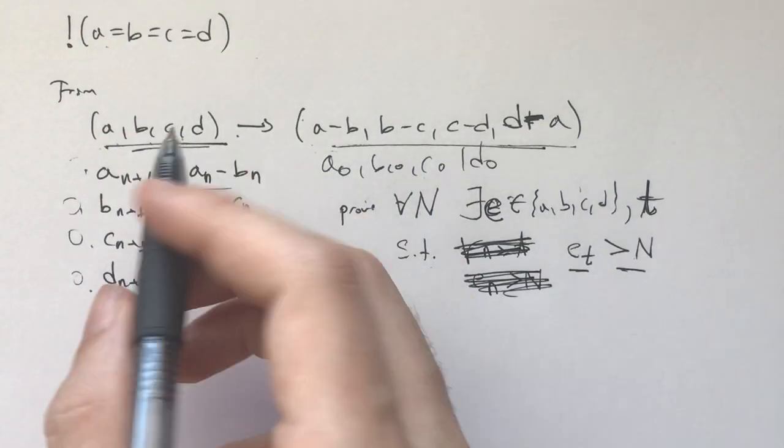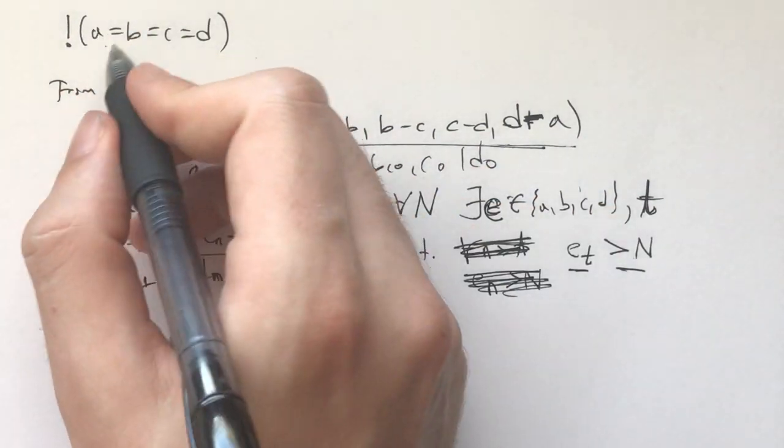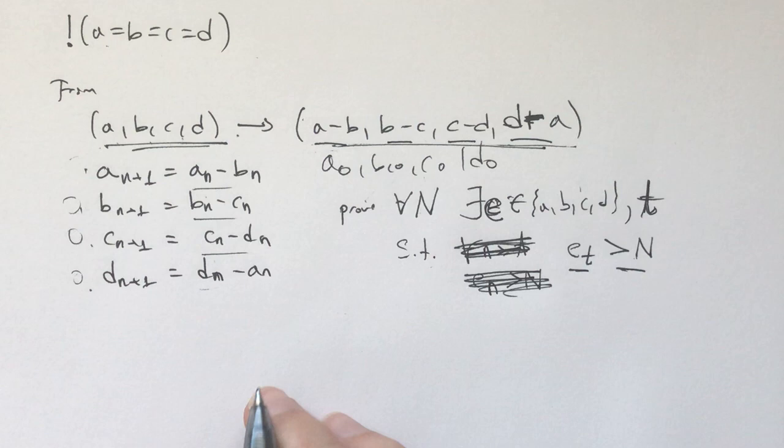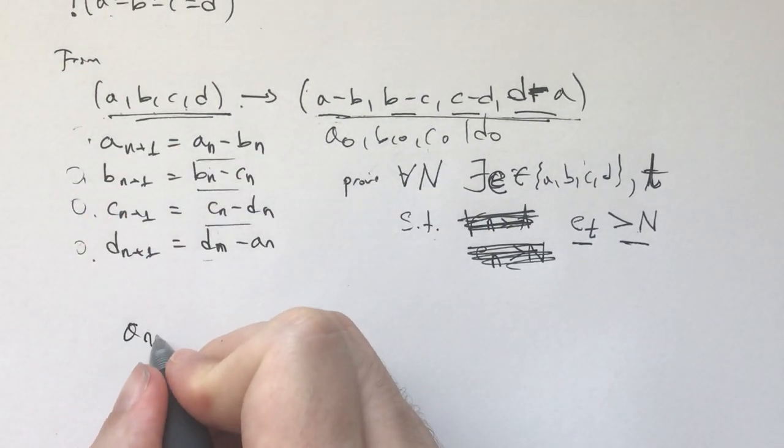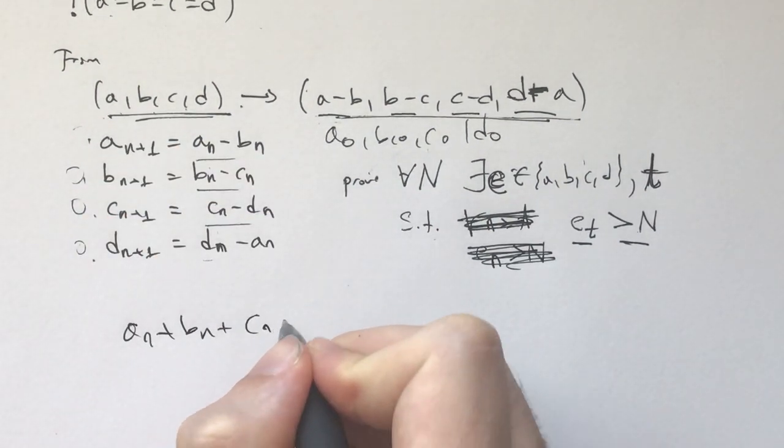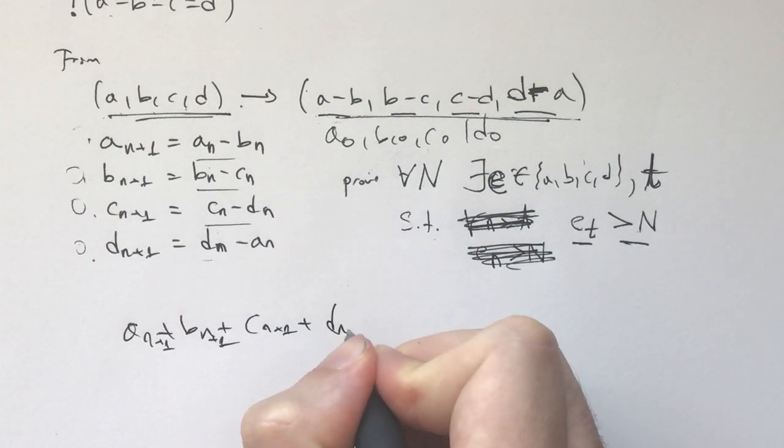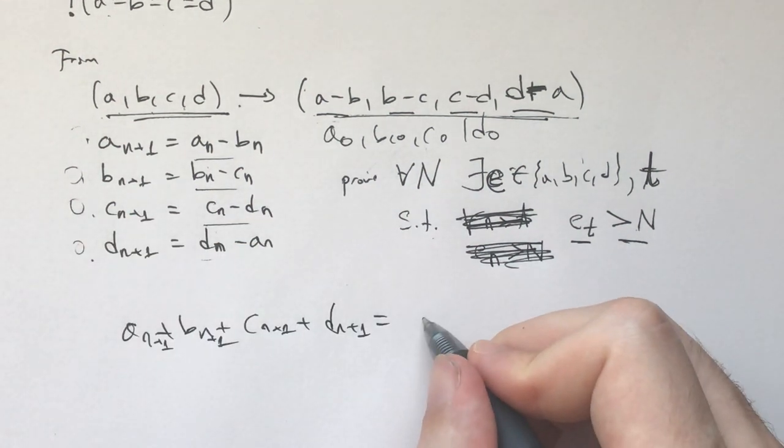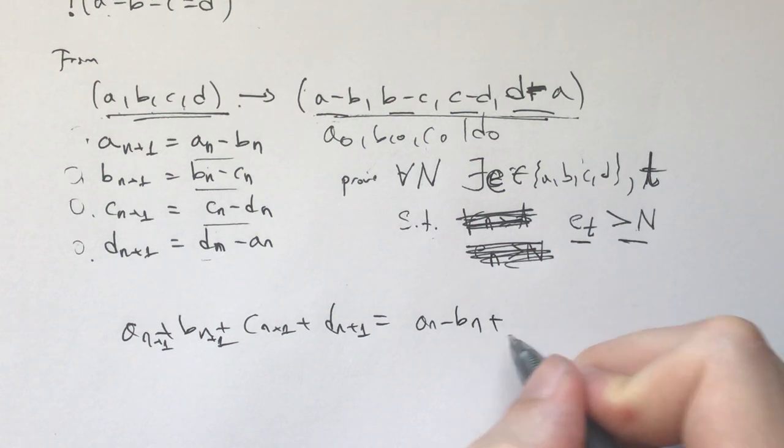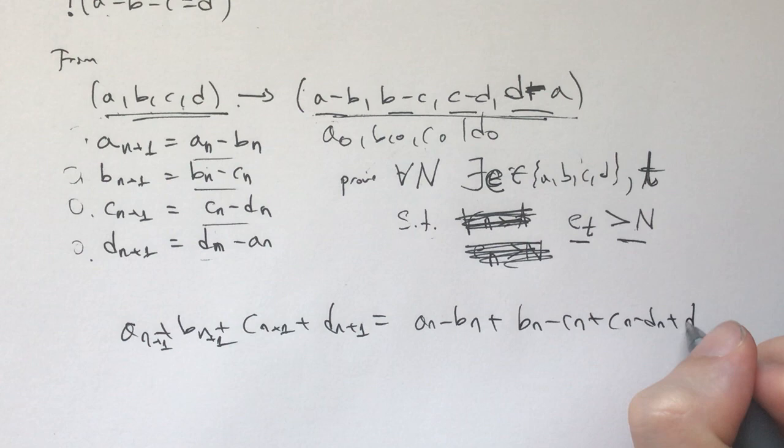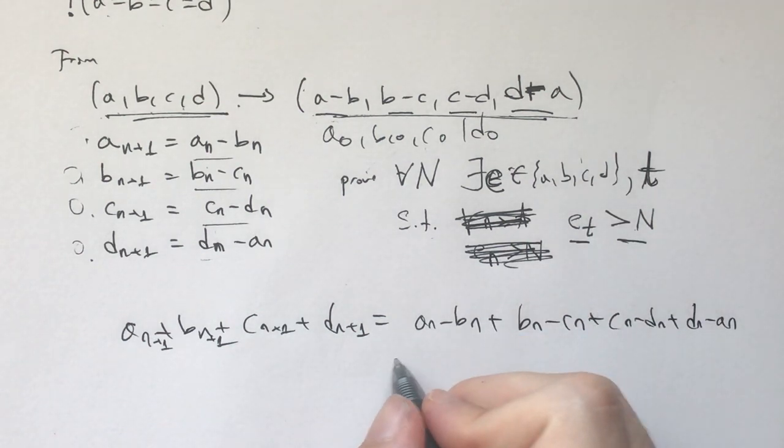What stays the same is that the sum, after the initial ones, what is a minus b, b minus c, c minus d, d minus a, so the sum An+1 plus Bn+1 plus Cn+1 plus Dn+1 is equal to An minus Bn plus Bn minus Cn plus Cn minus Dn plus Dn minus An, and this is all equal to 0.